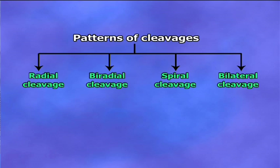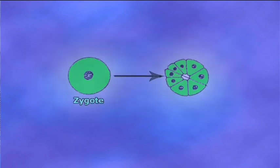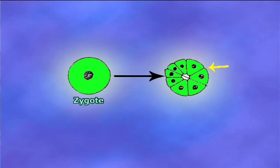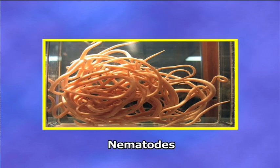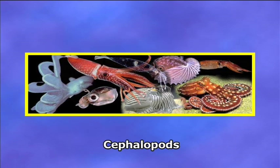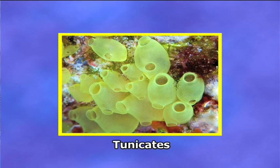The fourth type of cleavage is bilateral cleavage. In bilateral cleavage, the blastomeres are so arranged that the right and left sides become distinct. This cleavage pattern is dependent upon the different sizes of the blastomeres — two of the first four blastomeres may be larger than the other two, thus setting up a plane of bilateral symmetry in the developing embryo. Examples are nematodes, cephalopods, echinoderms, and tunicates.